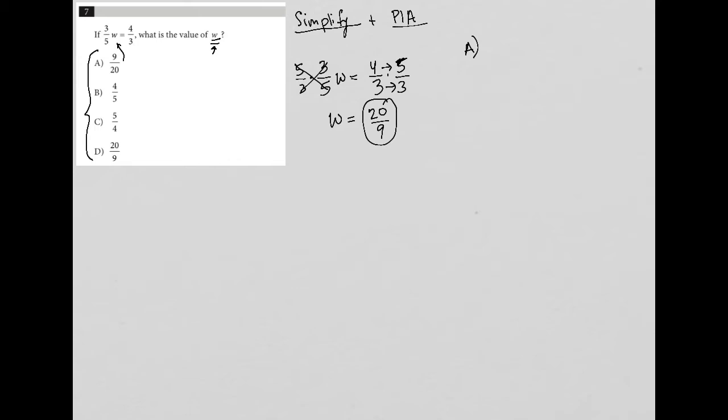Trying choice A would be three-fifths, and then instead of w, I'm replacing that with nine over 20 equals four over three. When I multiply straight across here, I get 27 over 100 equals four over three. That's just impossible because this fraction is a standard fraction where the numerator is less than the denominator, whereas this fraction is an improper fraction where the numerator is larger than the denominator. There's no way to simplify the first fraction to get four-thirds. So A would be gone.